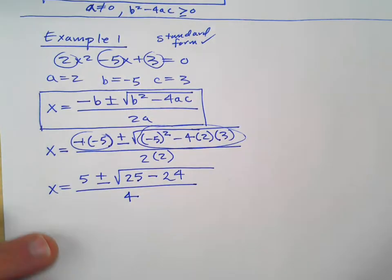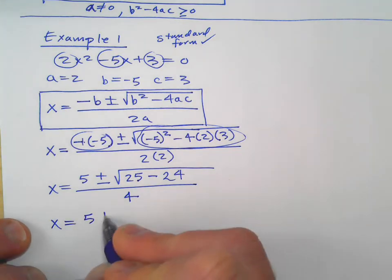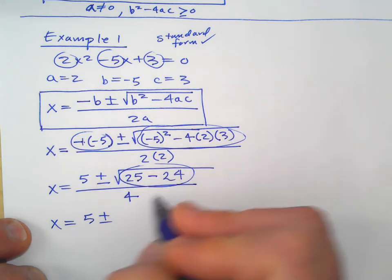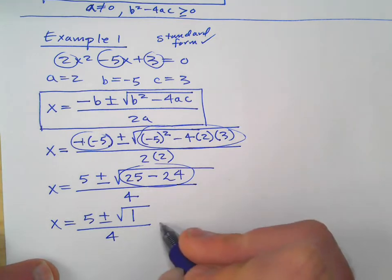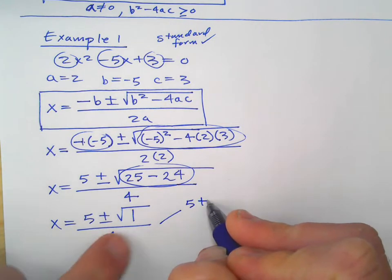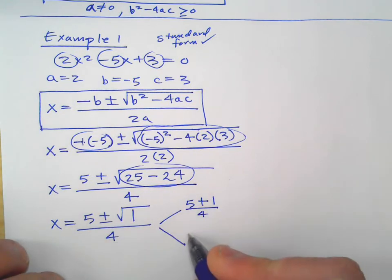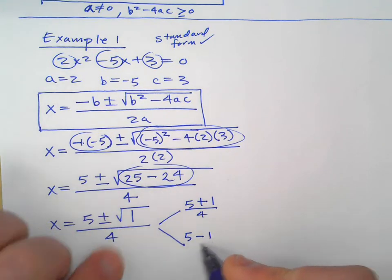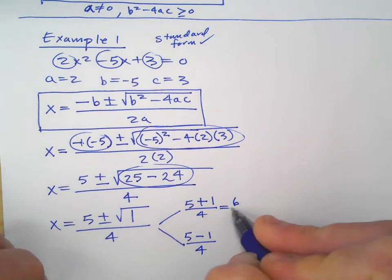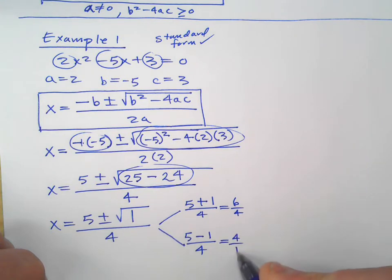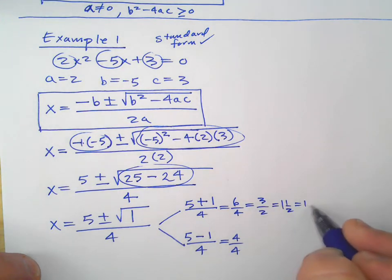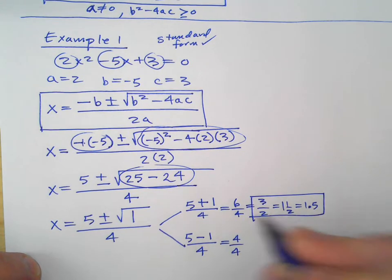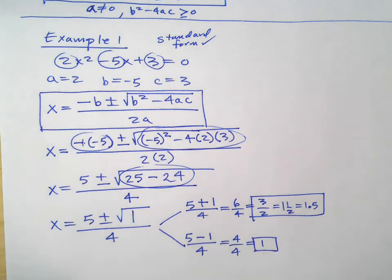I'm slowly making this simpler. Order of operations says we do what's inside the square root first: 25 minus 24 is 1. From here we get two answers. We get 5 plus the square root of 1, which is 1, over 4, giving 6 over 4, which is 3 halves, or 1.5. And we get 5 minus 1 over 4, giving 4 over 4, which equals 1. So those are your two solutions to that quadratic equation.